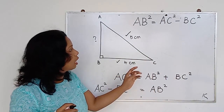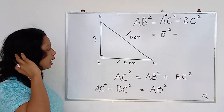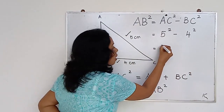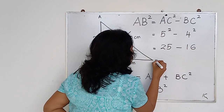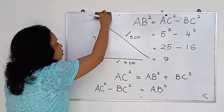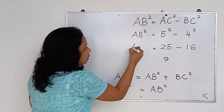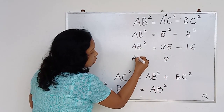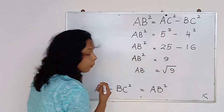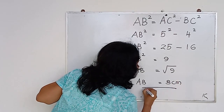They have given AC as 5 cm and BC as 4 cm, and we want to find AB. So AB squared = 5 squared minus 4 squared = 25 minus 16 = 9. So AB squared is 9. To find AB, we take the square root of 9, which gives AB = 3 cm. That is the answer.